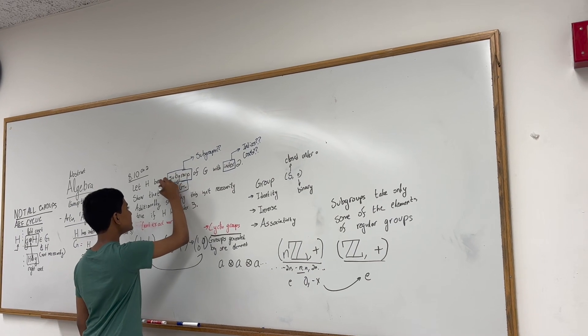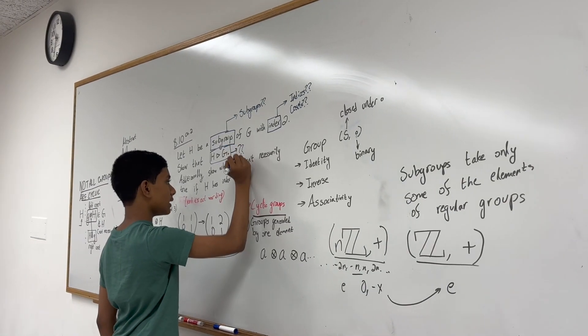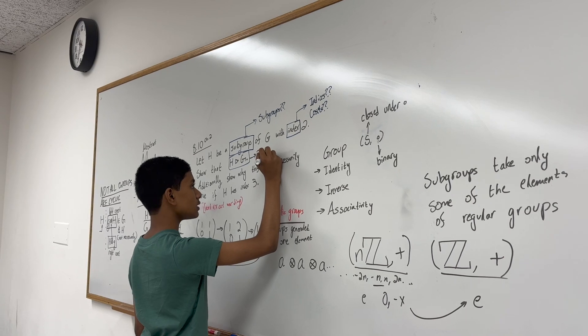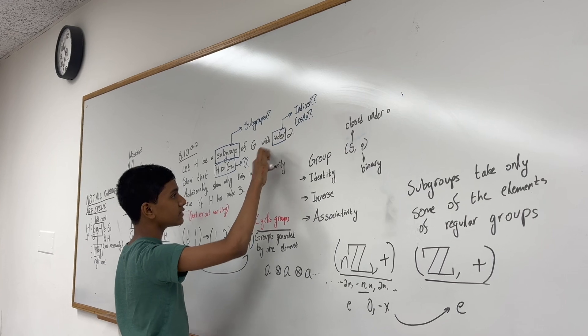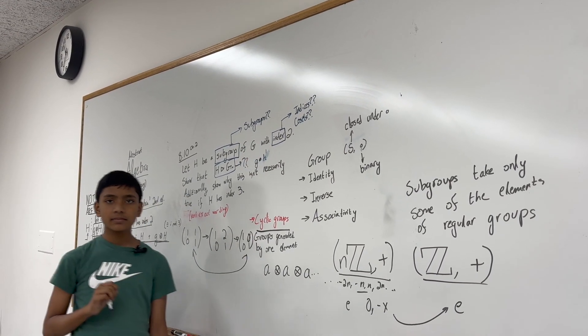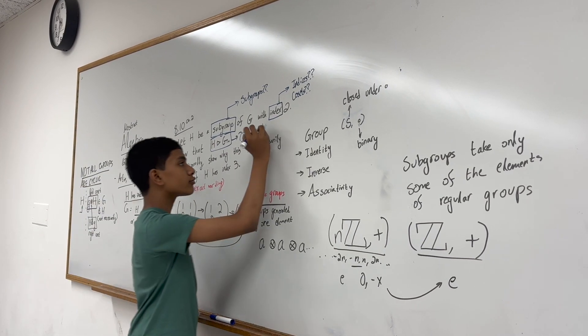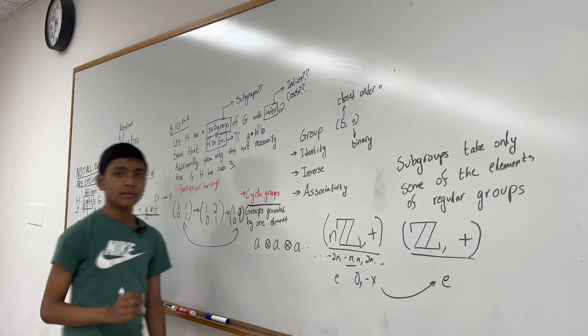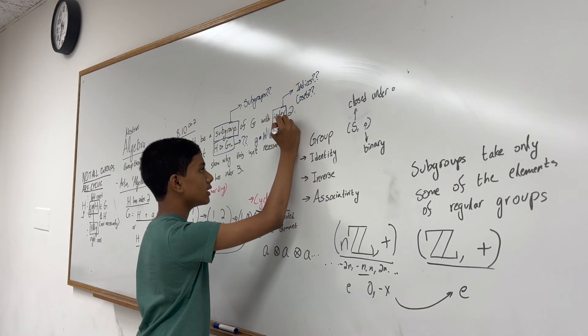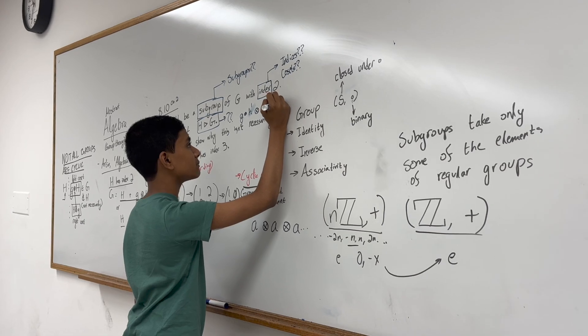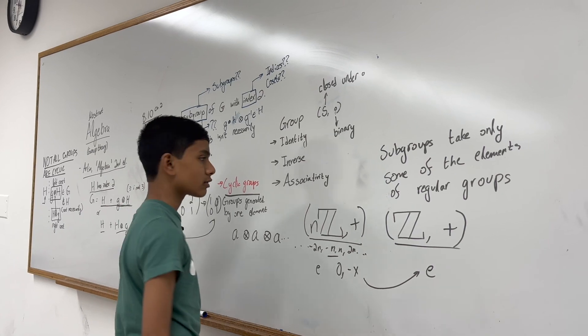Well, that just means that under conjugation, H maps to itself. And what does that mean? Well, conjugation is when on the left you multiply an element of the set by an element of the subgroup by an element of the larger group. On the right, you multiply the element by an inverse of that same element of the larger group. And now this has to map to another element in H. It doesn't necessarily have to be the same element, but it still has to map to another element in H.